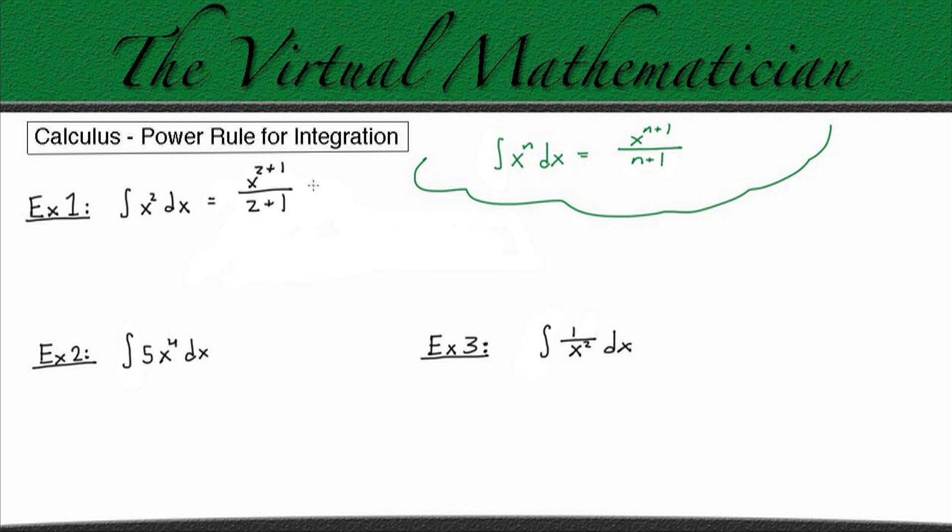And don't forget we have to add a constant c to keep generality. So we can simplify this and rewrite this as x cubed over 3 plus c. And if you want, you can even pull out that constant and rewrite this as 1 third times x cubed plus c. And that's how we take an integral using the power rule.